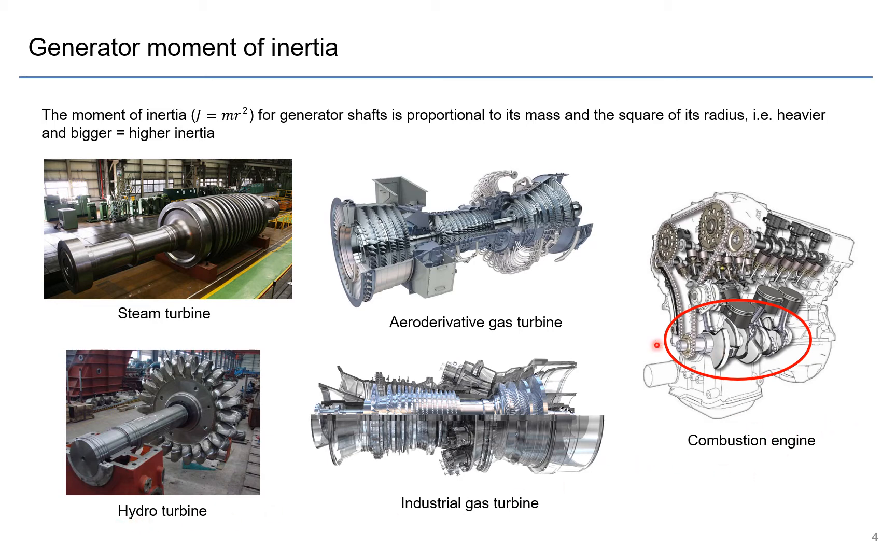And here we see the shaft basically from a combustion engine like a diesel engine, and you can see that there's not much mass or radius here and you don't expect there to be very high inertia from combustion engines.